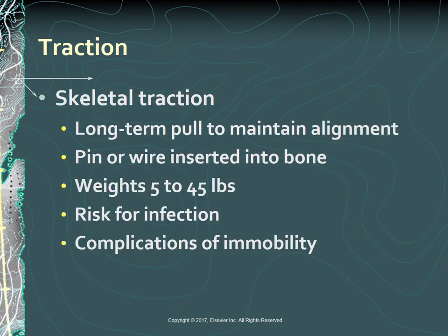Skeletal traction is generally in place for longer periods than skin traction. It is used to align injured bones and joints, or to treat joint contractures and congenital hip dysplasia. It provides a long-term pull that keeps injured bones and joints aligned. To apply skeletal traction, the surgeon inserts a pin or wire into the bone and weights are attached to align and immobilize the injured body part. Weight for skeletal traction ranges from 5 to 45 pounds. Too much weight can result in delayed union or nonunion. The major complications are infection at the pin insertion site and the effects of prolonged immobility.